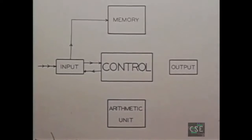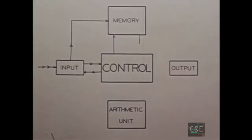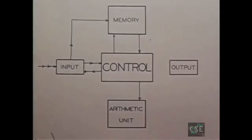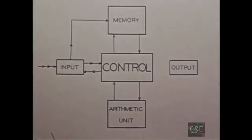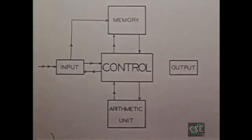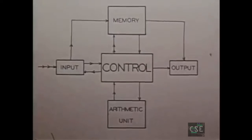The solution of the problem then begins. A button is pushed and the control tells the memory to send some material down into the arithmetic unit so it can be worked on. When an operation is completed, the arithmetic unit notifies the control. Intermediate and final answers are stored in the memory. Finally, the control instructs the memory to deliver the answer to the output and orders the output to phrase the answer in usable form.